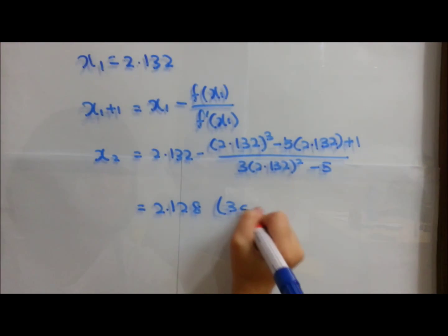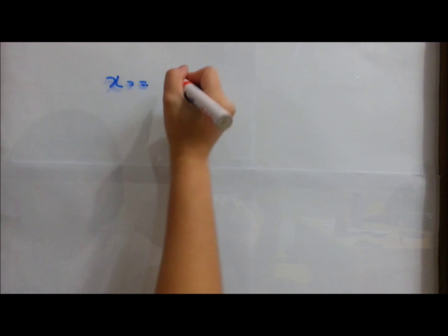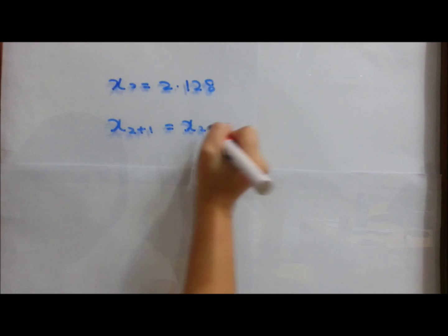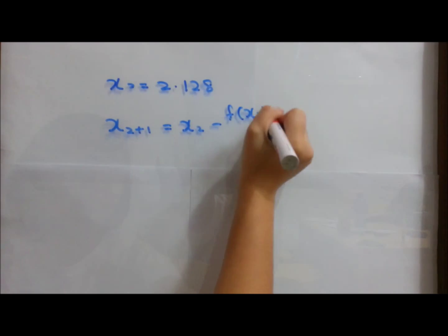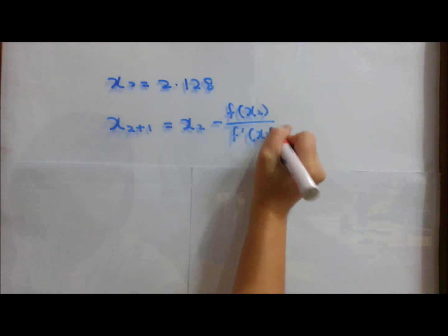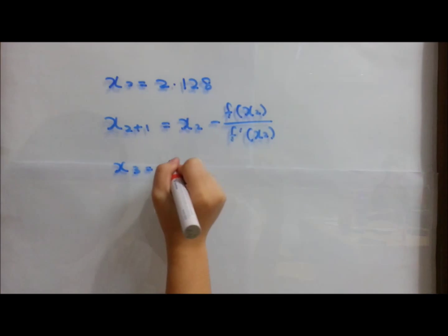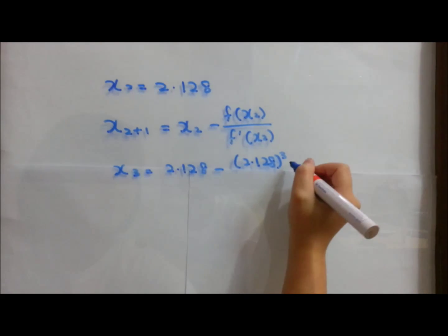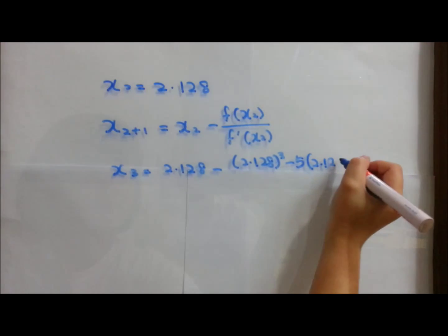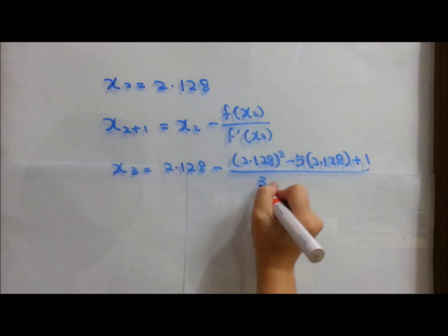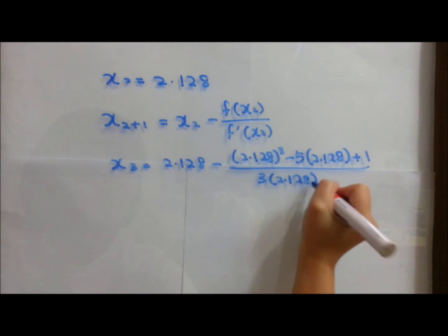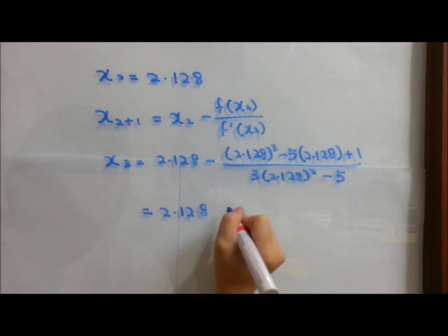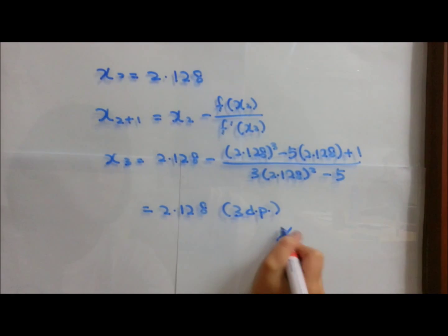To find x₃, x₃ will equal to x₂ minus f(x₂) over f'(x₂), which you will get 2.128 minus 2.128 cubed minus 5 bracket 2.128 plus 1 over 3 bracket 2.128 squared minus 5. And your answer for x₃ will equal to 2.128.